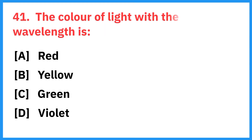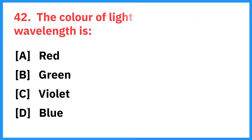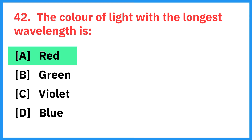The color of light that has the shortest wavelength is? Right answer is violet. The color of light that has the longest wavelength is? Right answer is red.